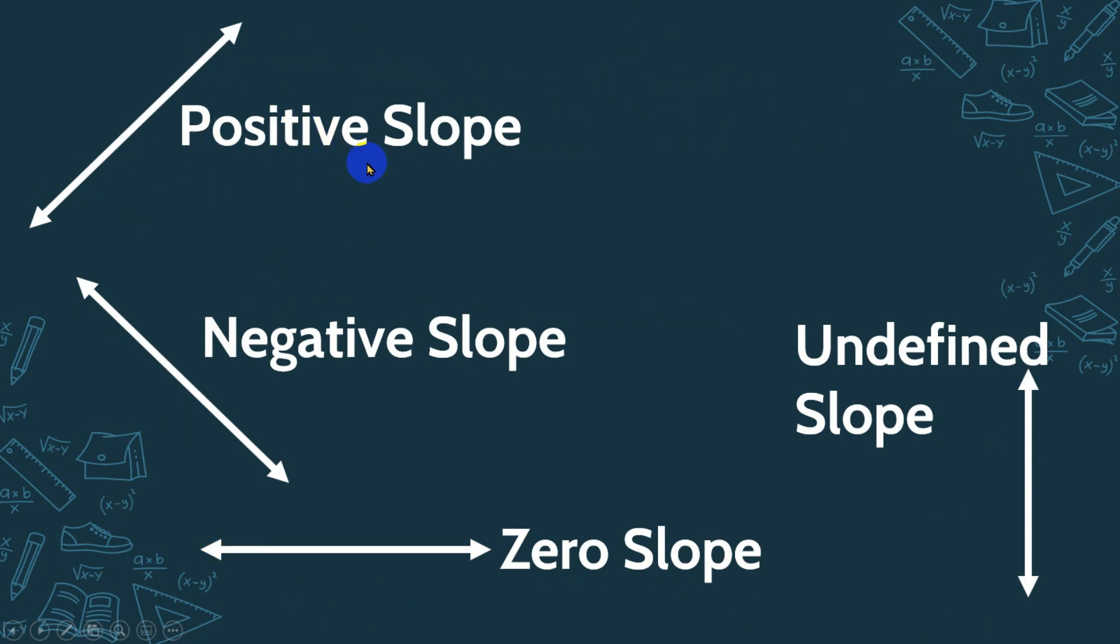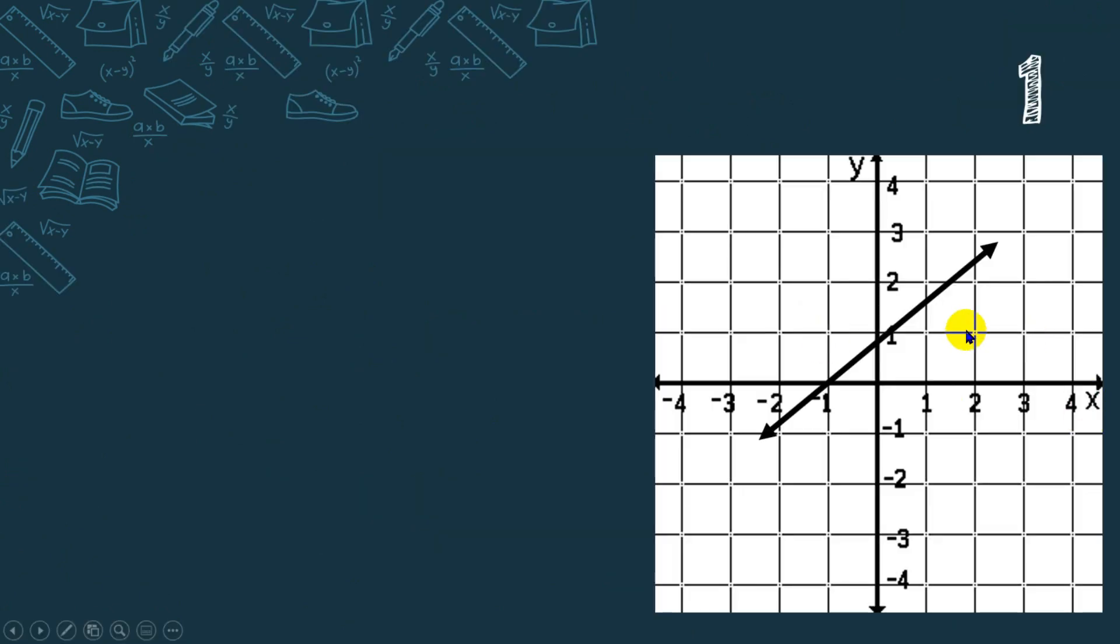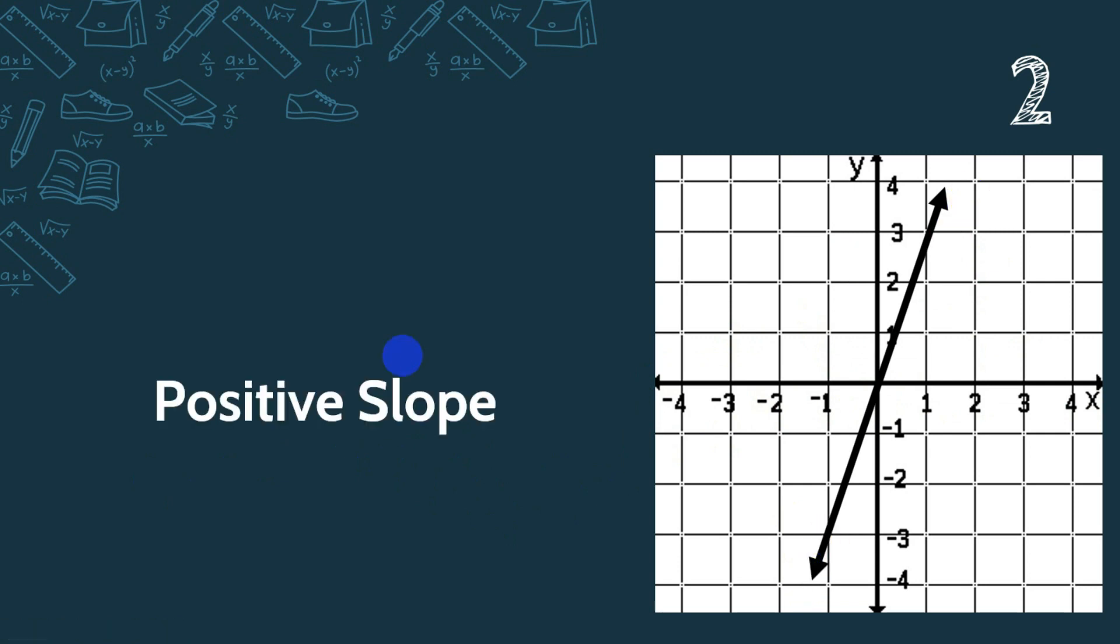Let's have some examples. Example number one: we have a line here upward from left to right, so it has positive slope. Number two: again upward from left to right, so it has positive slope.